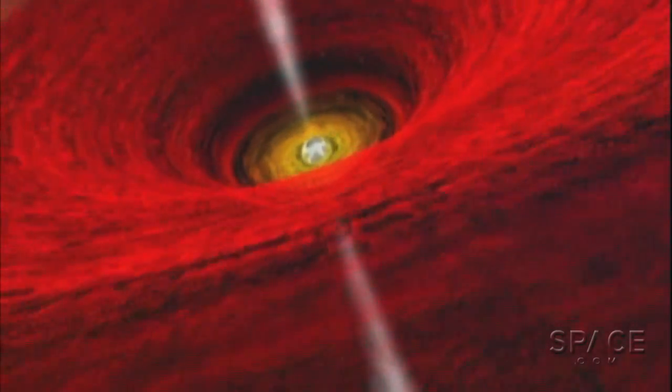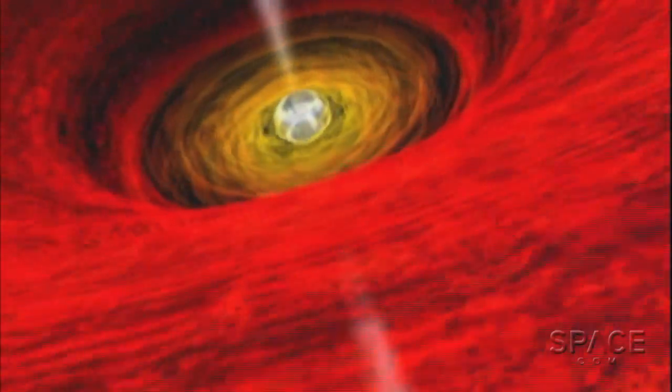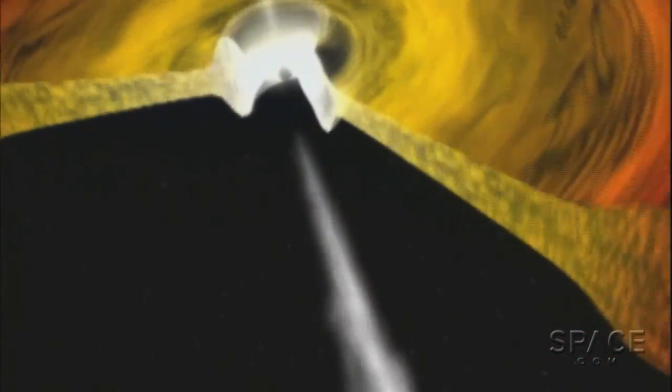Such spin strongly suggests it grew as the product of one big bite, or maybe in just a handful of slightly smaller gorging episodes, what astronomers call rapid accretion events.